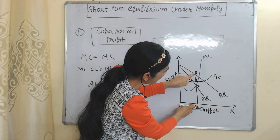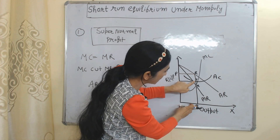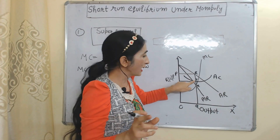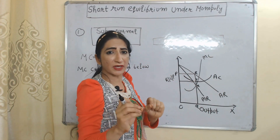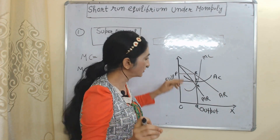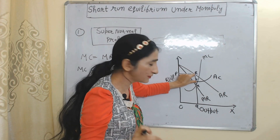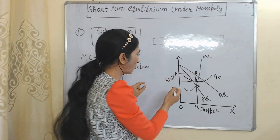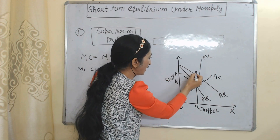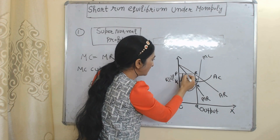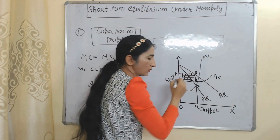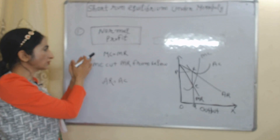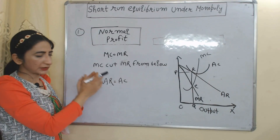Here you can see RQ is more than TQ, meaning average revenue is more than average cost. The difference between average revenue and average cost — this part RT — will be called per unit super normal profit. And this whole area KPRT will be called the total super normal profit of the monopoly firm during the short-run period.